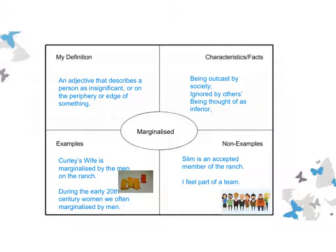Examples of situations where marginalisation is being shown: Curly's wife is marginalised by the men on the ranch — she's not included, she's not allowed to be with them or spend time with them, she's ostracised, she's on the edge of their group. Another example: during the early 20th century, women were often marginalised by men. For non-examples, think about the character of Slim. Slim is quite an integral character — he's very much included, considered the prince of the ranch, an accepted member. He is not marginalised. He's a non-example of marginalised.